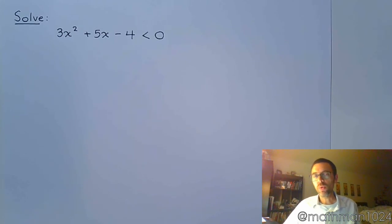Let's do one last example of a quadratic inequality. Seems simple enough, right? 3x squared plus 5x minus 4 is less than 0.